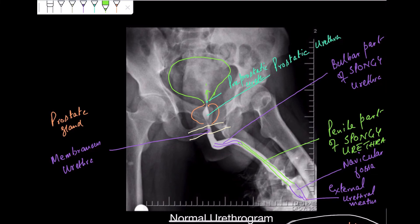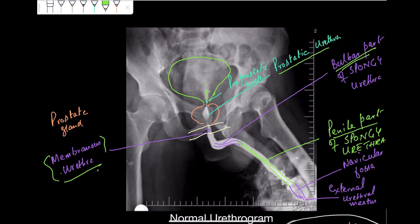The widest part of the urethra is the prostatic urethra. The most delicate part of the urethra is the membranous urethra, and the longest part of the urethra is the penile urethra. The bulbar urethra is susceptible to injury in straddle-type injuries, and this membranous part of the urethra is susceptible to injury during urethral catheterization or instrumentation.